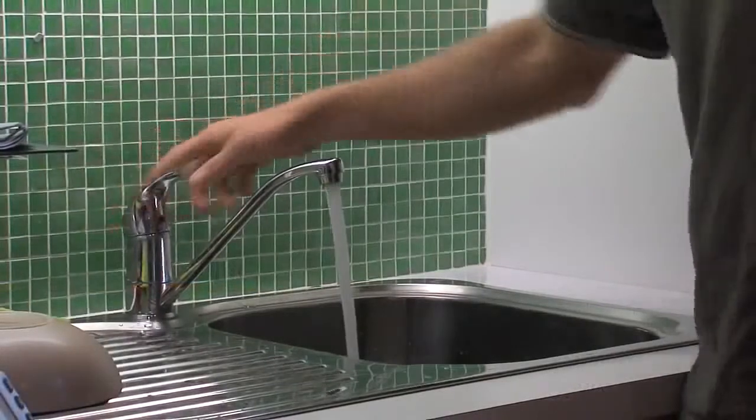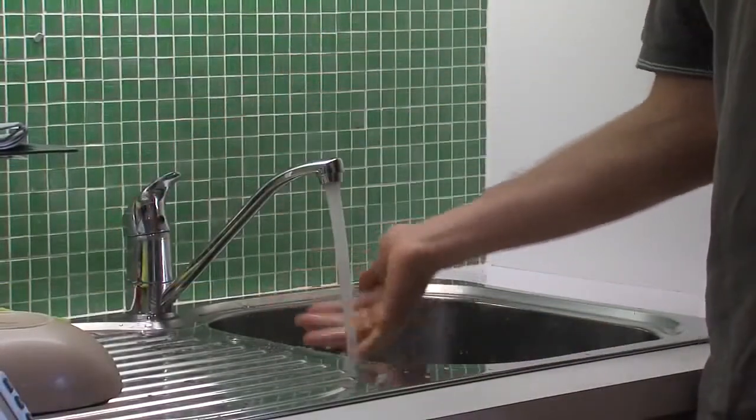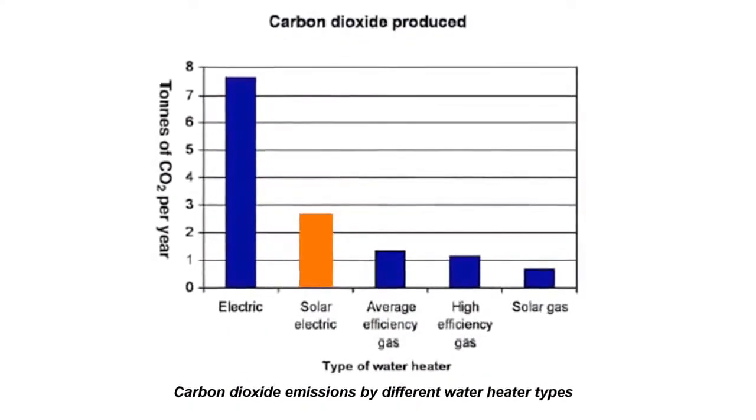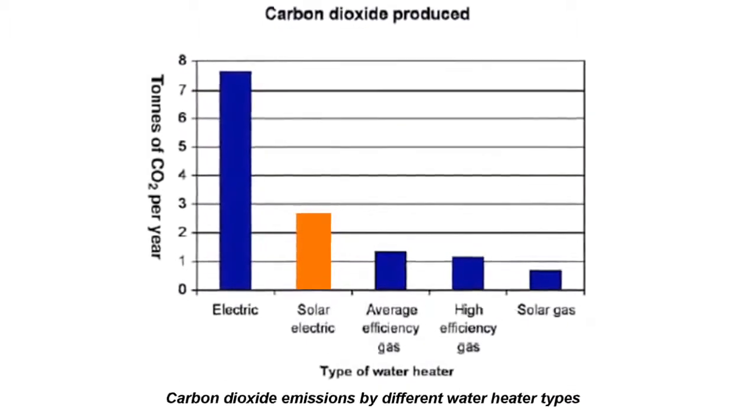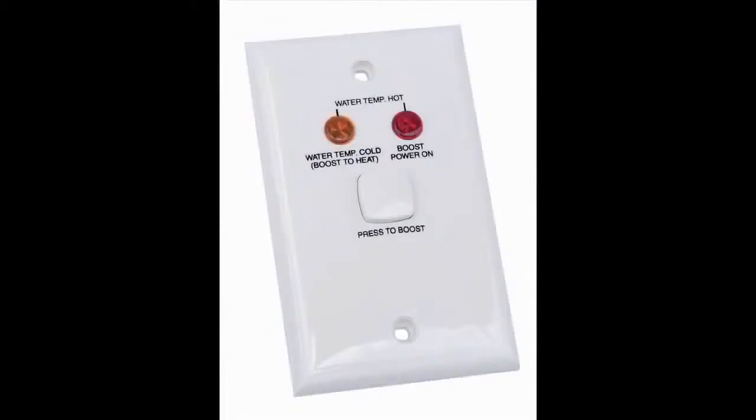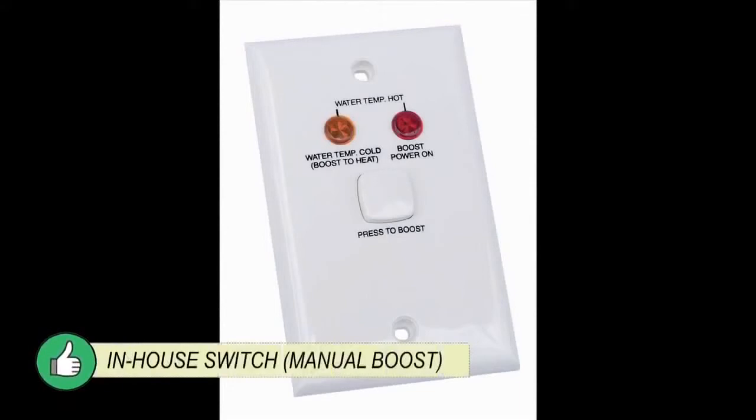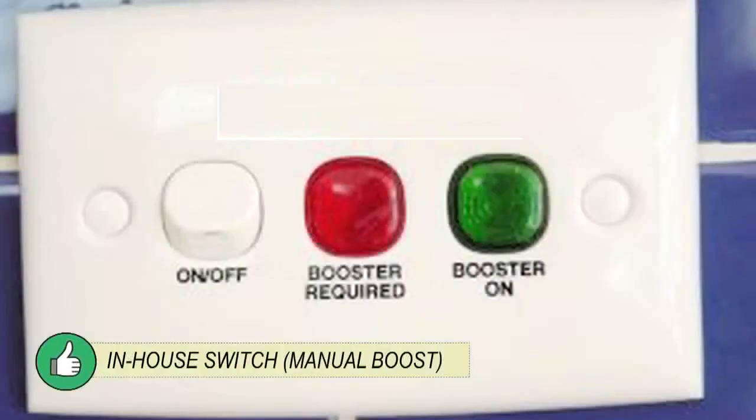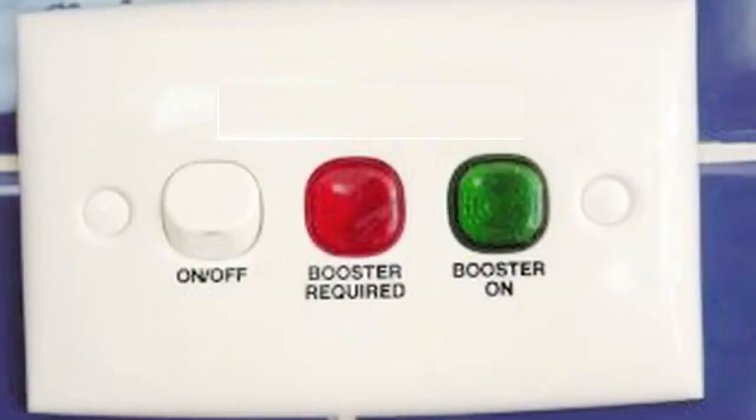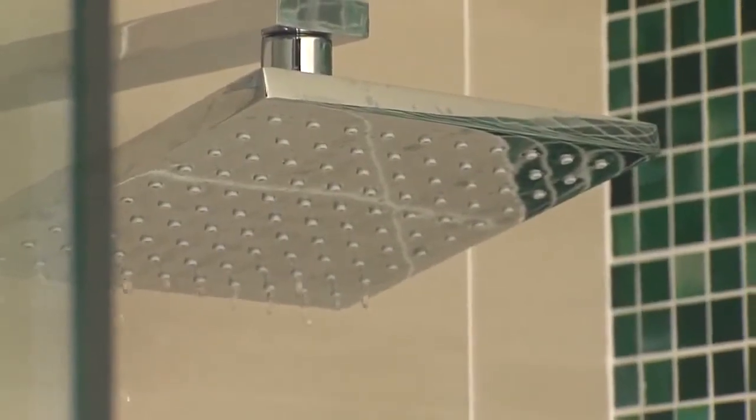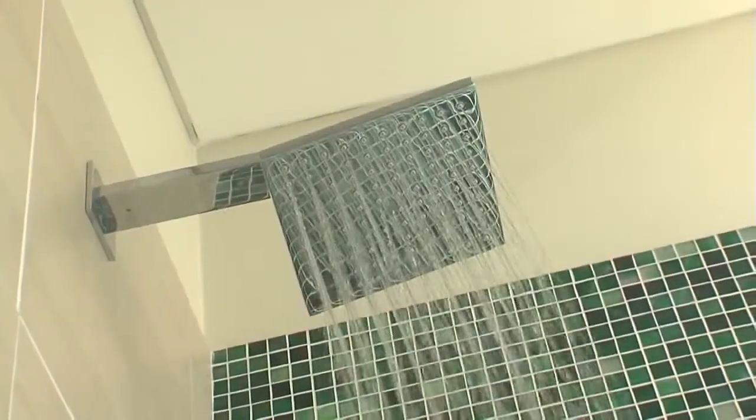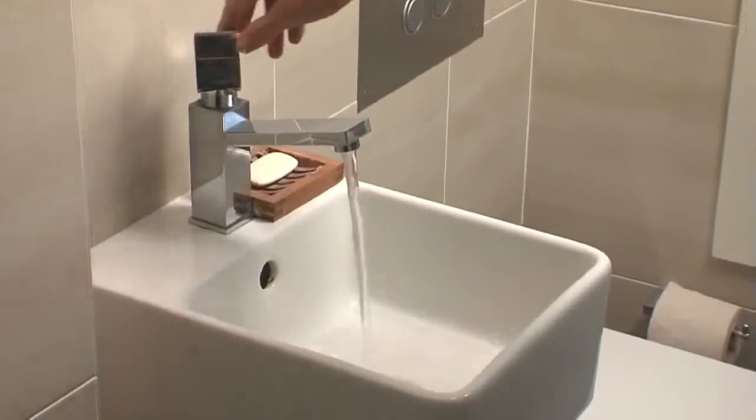The solar hot water system will require boosting at some times of the year. Electric boosters use a lot of power, so make sure the booster is controlled by a manual in-house switch. This switch should include a light to indicate when on. Boosters which have no in-house switch or are permanently on are wasteful, as they often heat water to 60 degrees, water which would otherwise be heated by the sun.